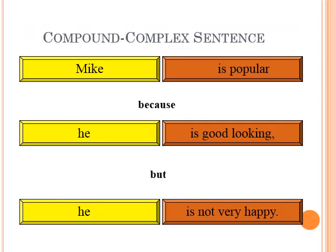The fourth type is the compound-complex sentence. For example: 'Mike is popular because he is good looking, but he is not very happy.' There are multiple dependent and independent clauses linked together with both subordinating and coordinating conjunctions.